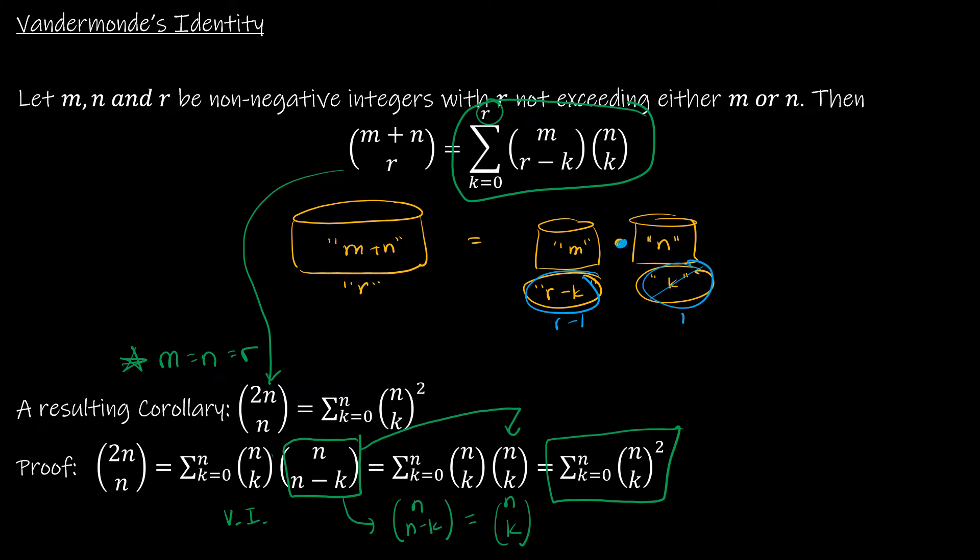So I've replaced this with n choose k, and now obviously I have two of them, and so therefore I have proved that 2n choose n is in fact equal to the summation as k goes from 0 to n of n choose k quantity squared.